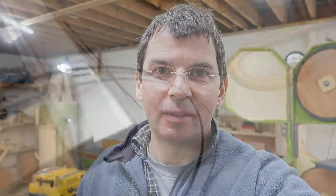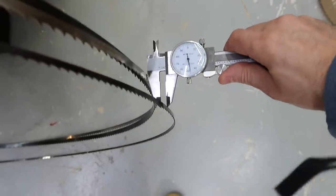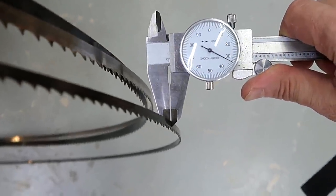But I wonder if there's more at play, because this blade that gives me all this trouble has got a lot more set to it. So I just verified that all of these blades have 32 thou thickness to them. Let's check the set.